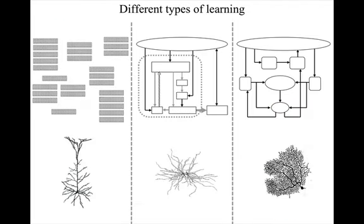And in each case, ultimately the information has to be recorded on a spiny neuron — a pyramidal neuron in the cortex, a medium spiny neuron in the striatum, or a Purkinje cell in the cerebellar cortex. So the learning process has to converge on a state in which huge numbers of synapses have all acquired appropriate synaptic weights.